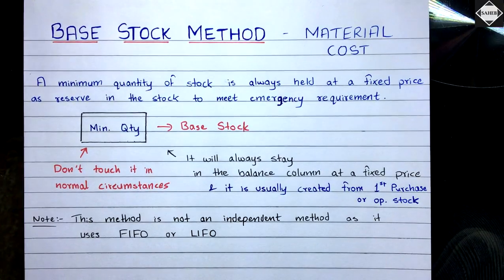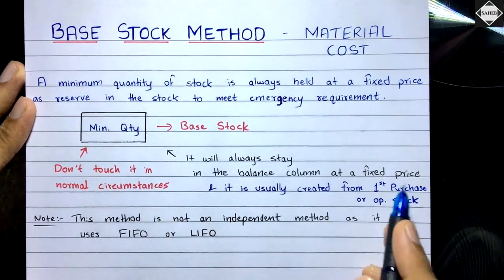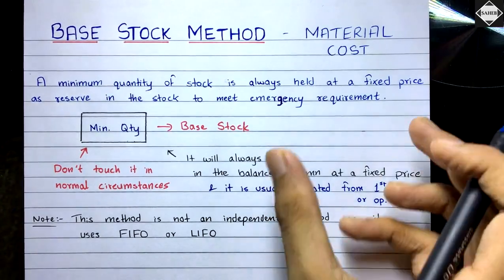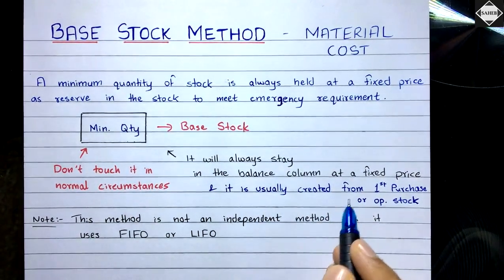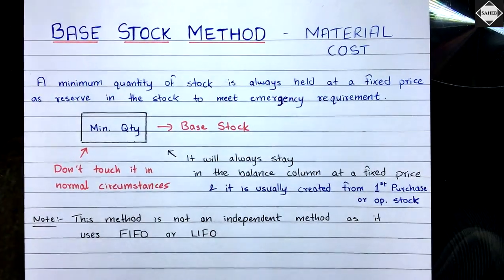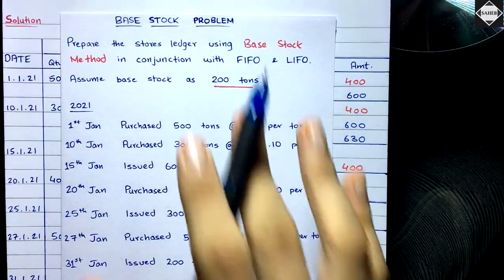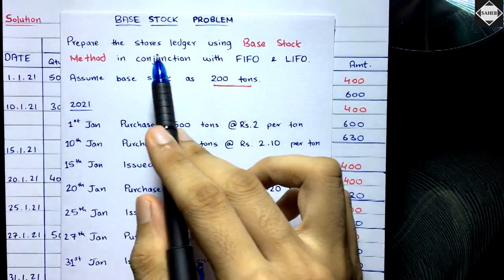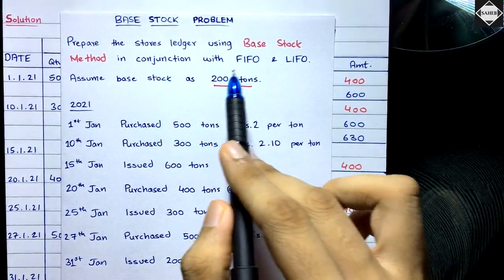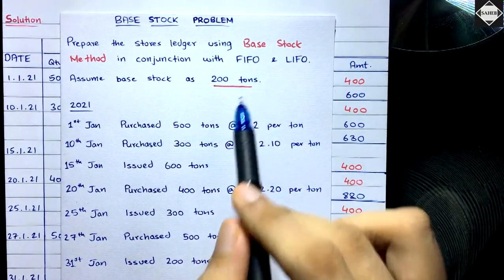It will be clearer when we take a practical example. The base stock lot will always stay in the balance column at a fixed price — that lot you will not touch. Now here we have a practical question: prepare the stores ledger using base stock method in conjunction with FIFO and LIFO, assuming base stock as 200 tons. We have to prepare two stores ledgers — one with FIFO and another with LIFO.